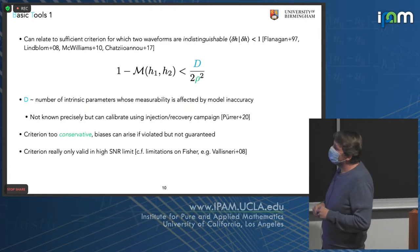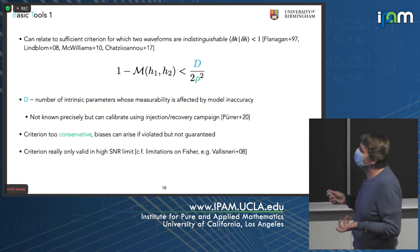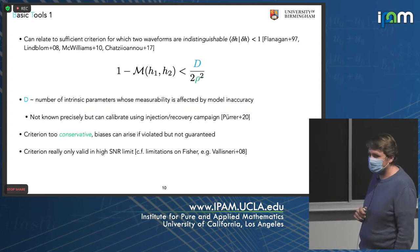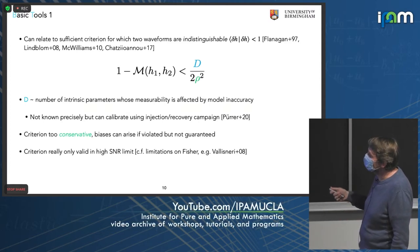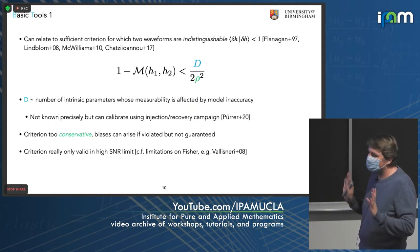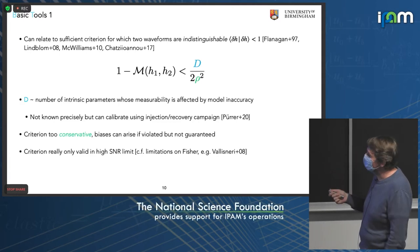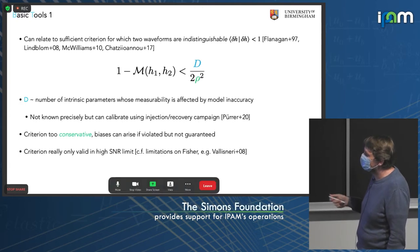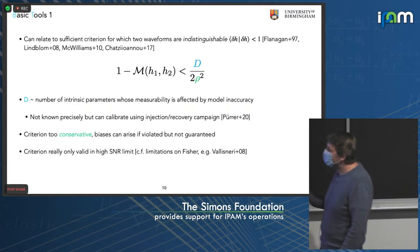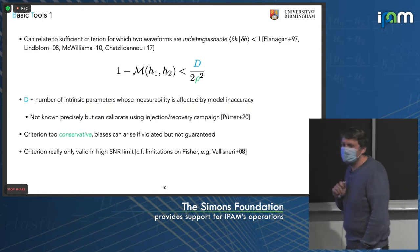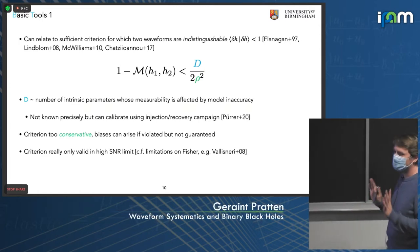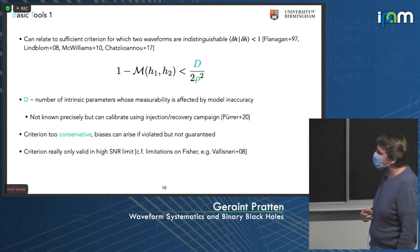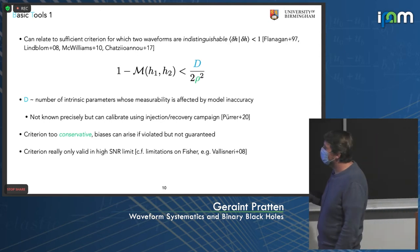Mismatches can be related to a sufficiency criterion in which two waveforms are considered indistinguishable. The mismatch is one minus the match, and it's related to the network SNR rho and D, the number of intrinsic parameters whose measurability is affected by the model inaccuracy. This D isn't precisely known a priori — you can make order-of-magnitude arguments or calibrate this number by performing inject-and-recover campaigns, as was done in a paper by Michael Pürrer. There are caveats: this criterion is conservative, biases can arise below this threshold but it's not guaranteed, and it's only valid in the high-SNR limit.